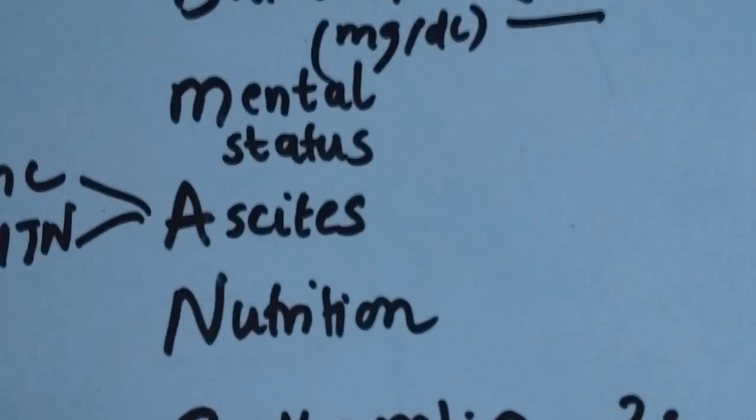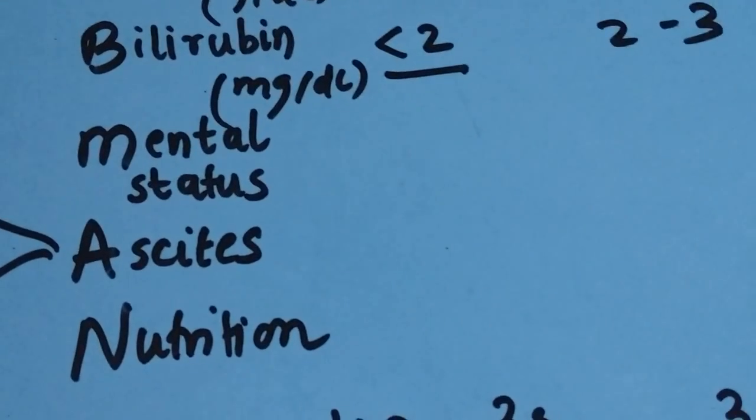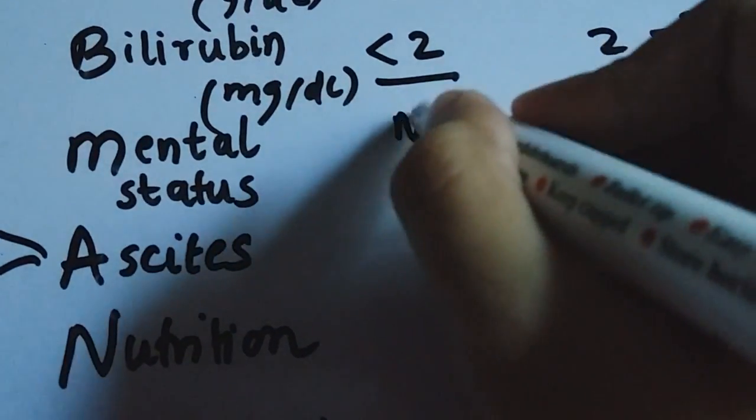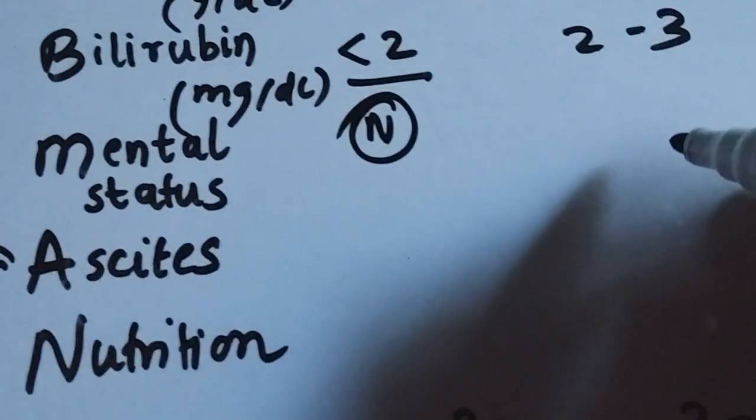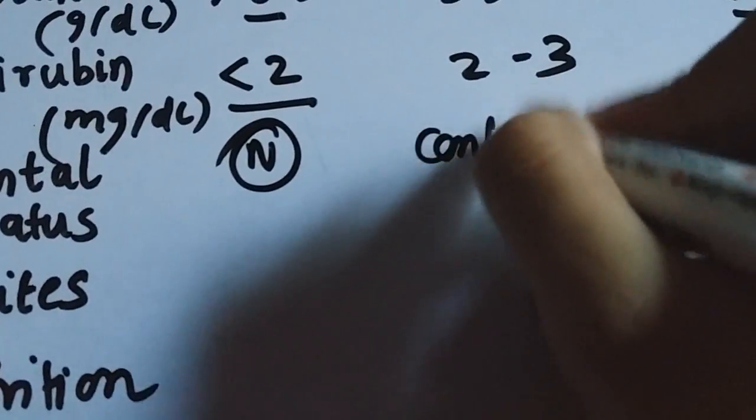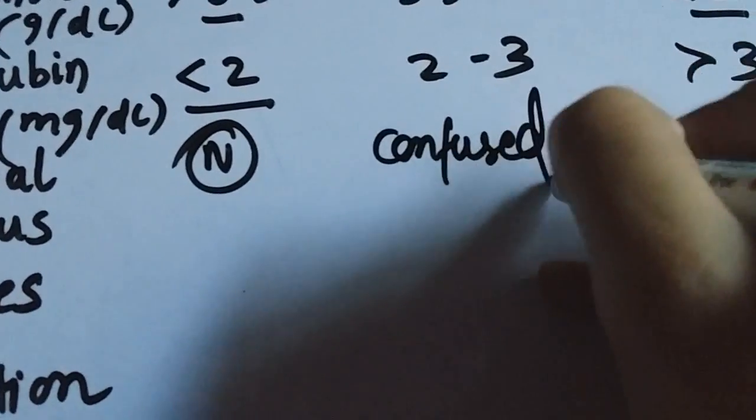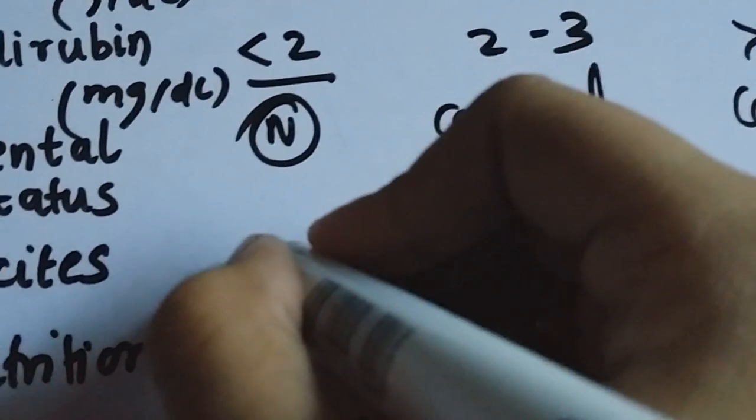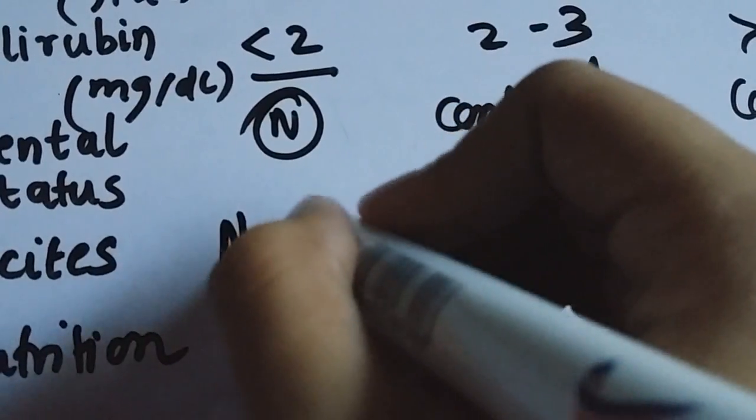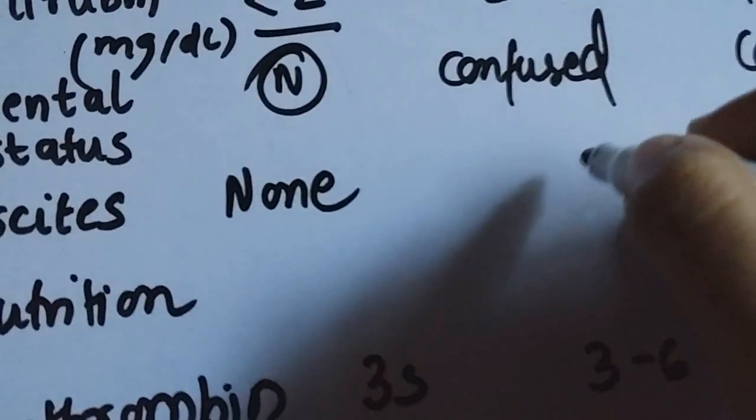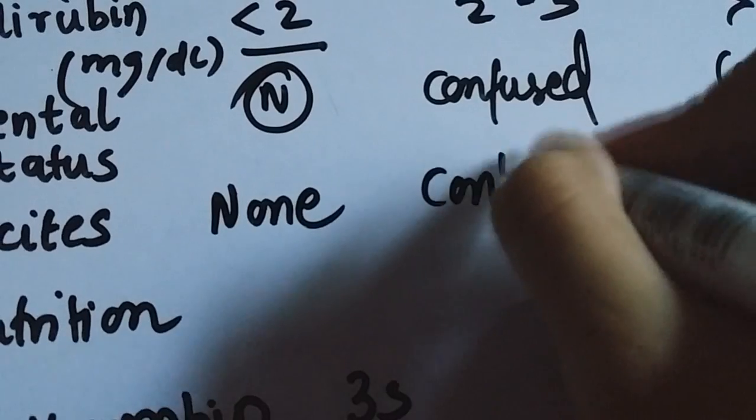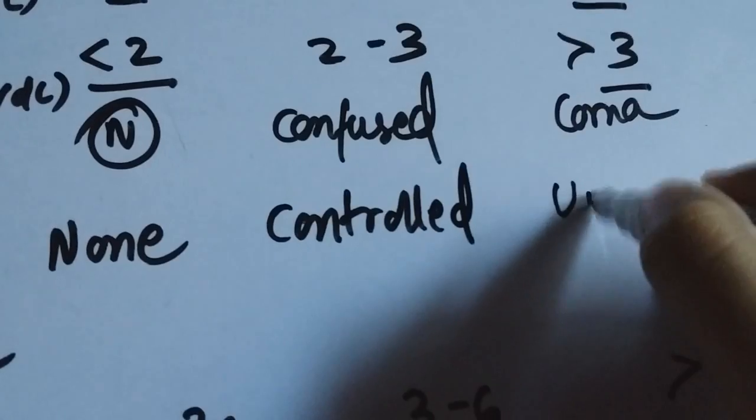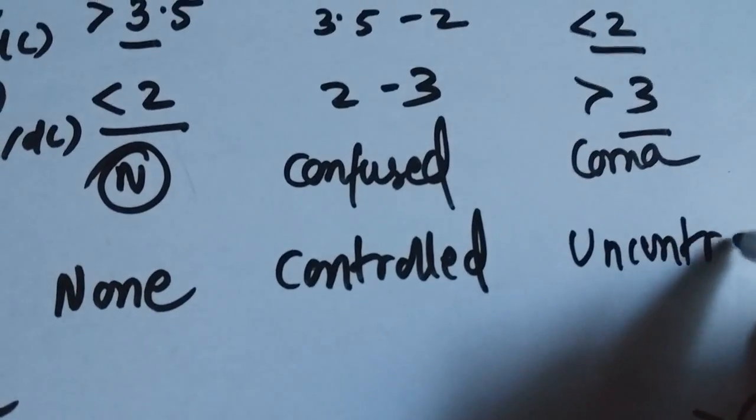For the sake of completion, I'll just talk about the mental status, ascites, and nutrition. If the mental status is normal, then you give 1 point. If the patient is confused or disoriented, then you give 2 points. And if the patient is in a coma, you give 3 points. If the patient has no ascites, you give 1 point. If it is controlled but it's there, then you give 2 points. And if it's uncontrolled, then you give 3 points.